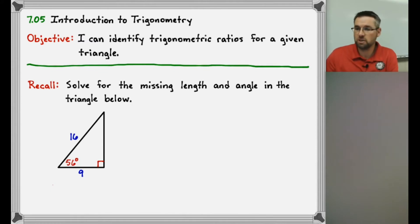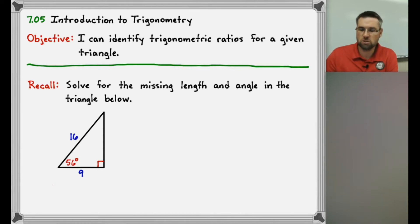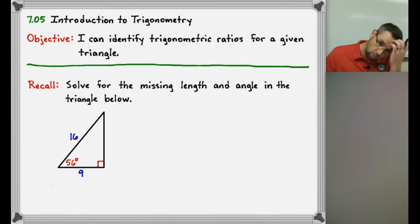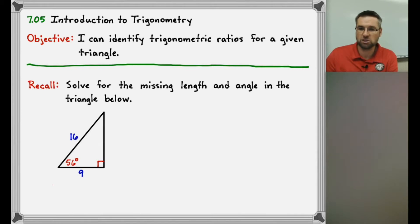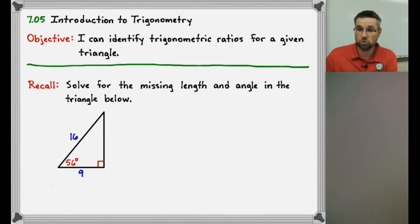And then we dealt with special right triangles — the 45-45-90 and the 30-60-90 — so that we could use those similarities to determine missing sides. Well, now we're gonna find missing side lengths of triangles that are not special triangles. They are right triangles, but there's nothing particularly significant about their relationships that sticks out. So we're gonna use this idea called trigonometry to do that.